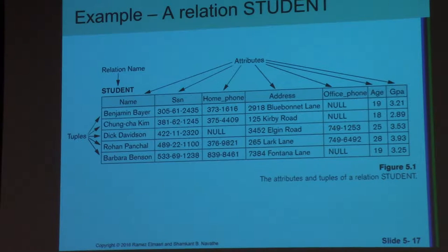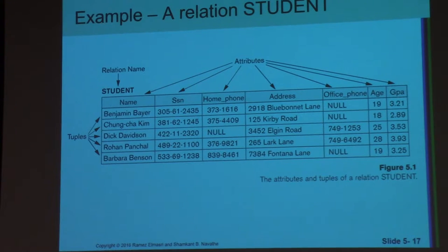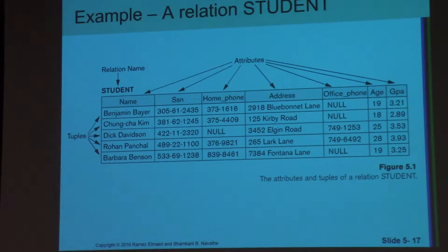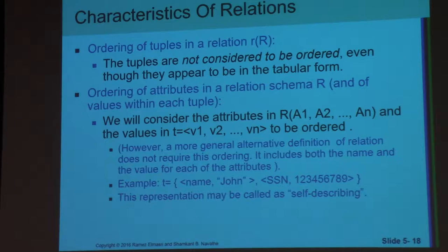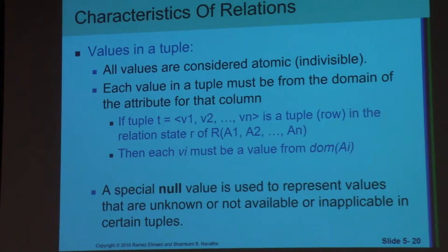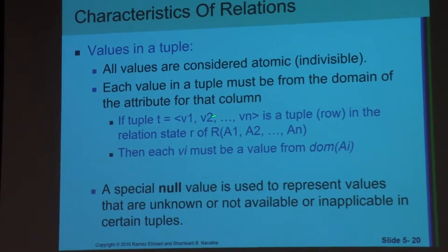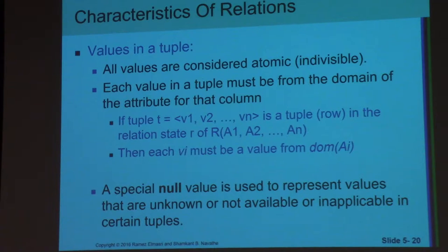Nowadays, due to its very strict definitions and model, we consider alternatives like NoSQL or other flexible database models. Each tuple has a number of attributes. We use capital letters to indicate the relation name, like Student or Department. However, in general, the database model and DBMS are not case sensitive.